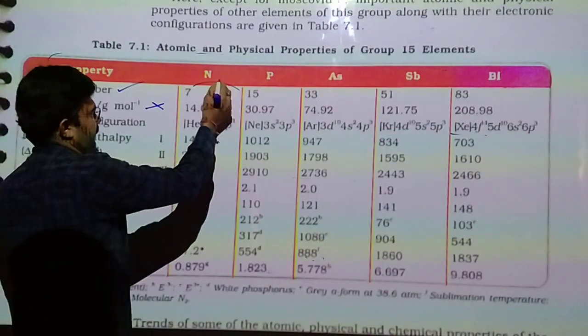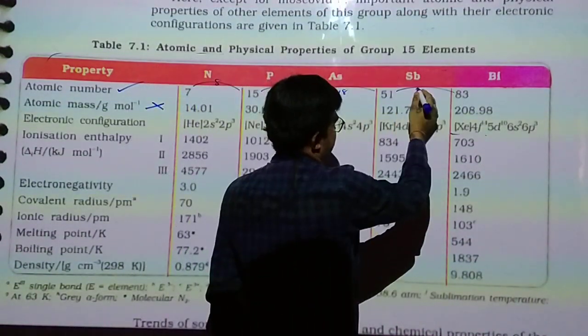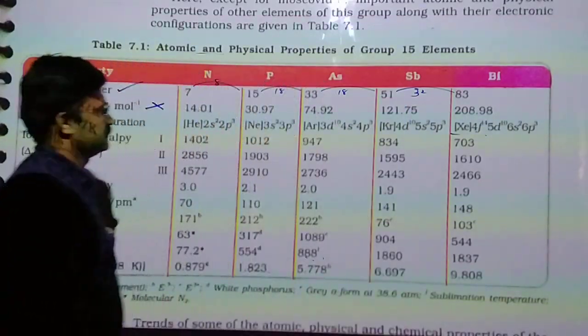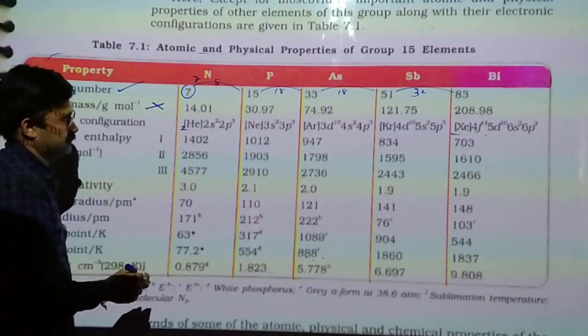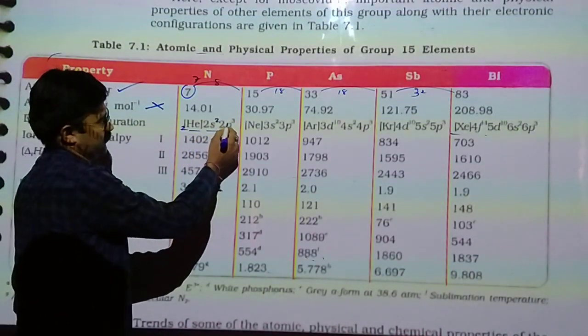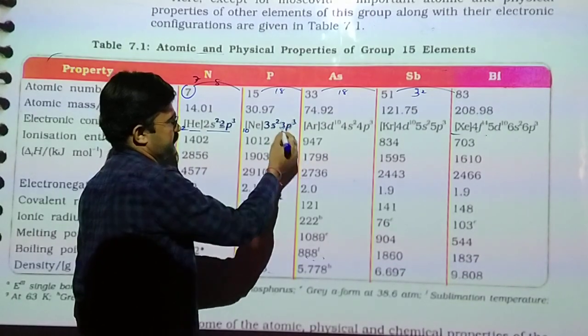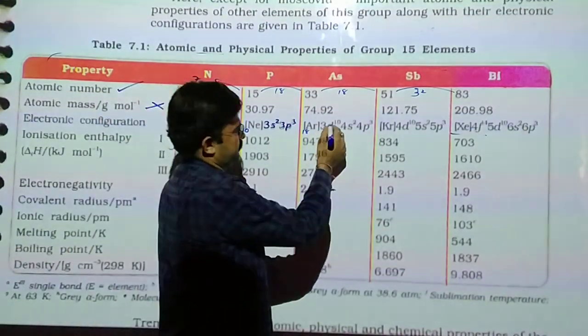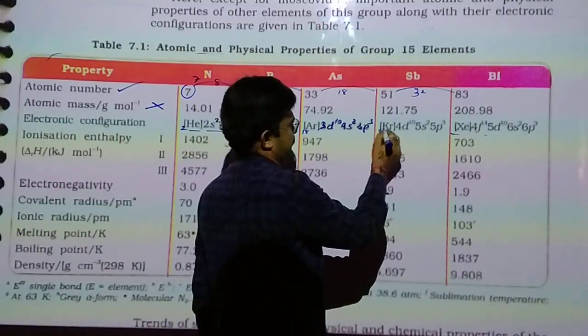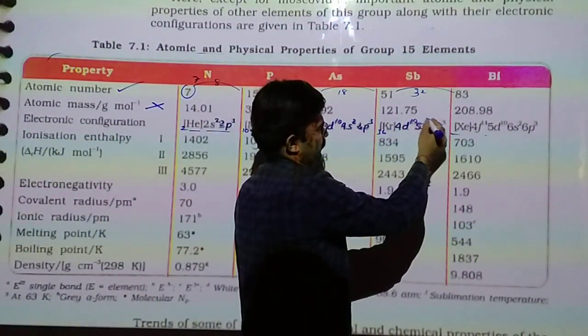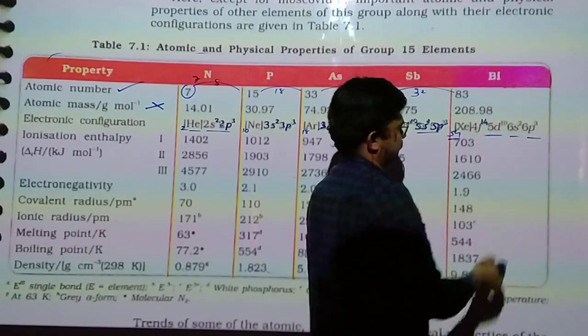Atomic number 7, then add 8 is 15, 15 plus 18 is 33, 33 plus 18 is 51, 51 plus 32 gives 83. Electronic configuration: atomic number of nitrogen 7, after Helium 1s2 2s2 2p3. In Phosphorus, Neon 10, 3s2 3p3. In Arsenic, Argon 18, 3d10 4s2 4p3. In Antimony, Krypton 36, 4d10 5s2 5p3. In Bismuth, Xenon 54, 4f14 5d10 6s2 6p3.